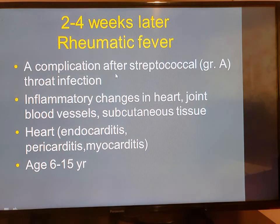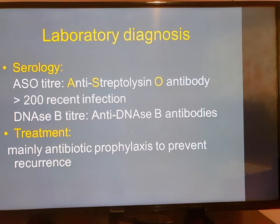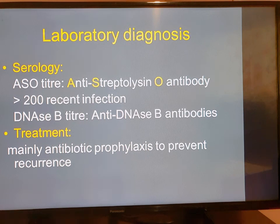Cervical adenopathy is also present — the glands around the neck are palpable and swollen. Complications following Streptococcal Group A infection include inflammatory changes in the heart, joints, blood vessels, and subcutaneous tissues, causing endocarditis, pericarditis, and myocarditis — typically seen in children aged 6 to 15 years. Diagnosis of rheumatic fever involves anti-streptolysin O antibody levels; if greater than 200, it indicates a recent infection. DNase antibodies are also detectable and raised.